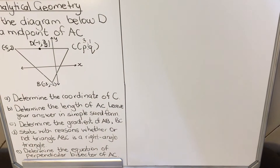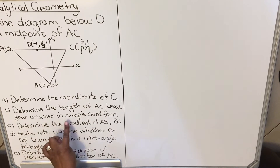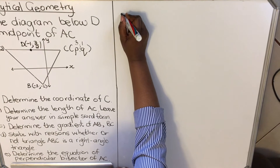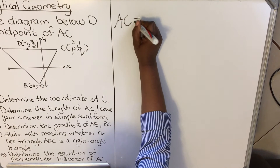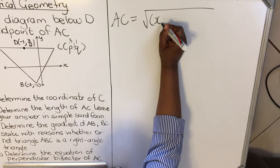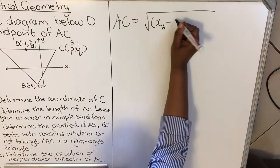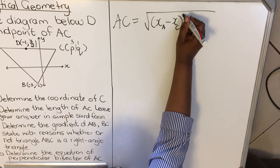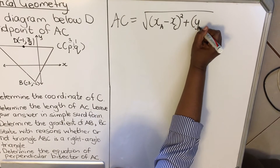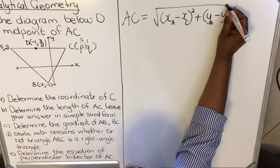Let's look at number B — determine the length of AC and leave your answer in surd form. The formula for the length is: AC = √[(x_A - x_C)² + (y_A - y_C)²]. You need to memorize this formula.